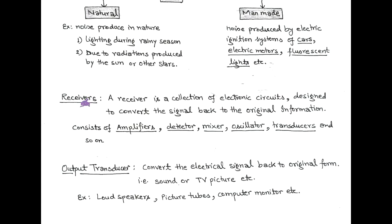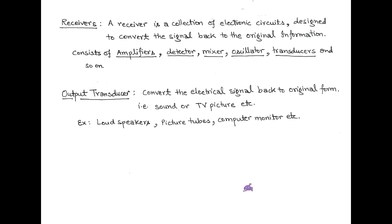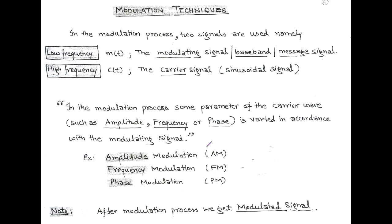After propagating through a communication channel, noise is added, so the noisy signal is received at the receiver. A receiver is a collection of electronic circuits designed so that the signal is converted back to the original information. It consists of an amplifier, detector, mixer, oscillator, and many more components. To get the information in its original form, we require an output transducer. The output transducer may be a loudspeaker, TV, or computer monitor. In a communication system, there is a method called modulation at the transmitter side and demodulation at the receiving side.